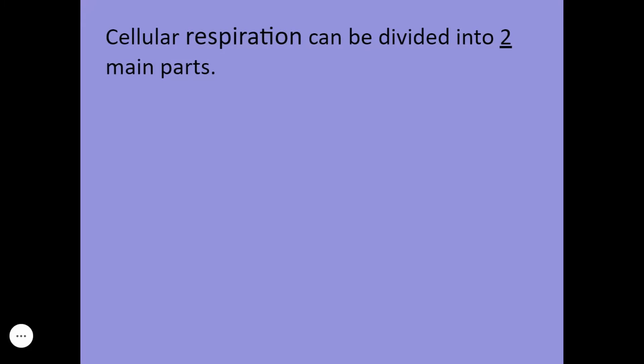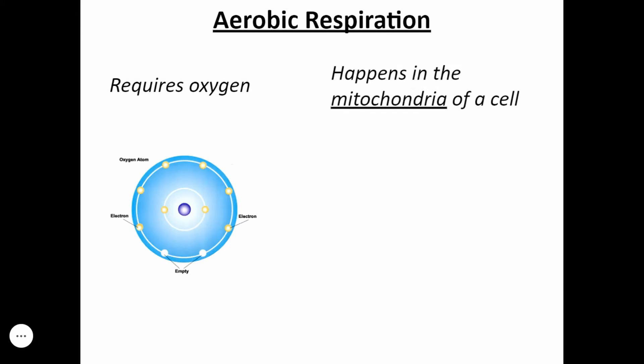Cellular respiration can be divided into two main parts. There's aerobic respiration and anaerobic respiration. In aerobic respiration, oxygen is required. And it happens in the mitochondria of the cell.